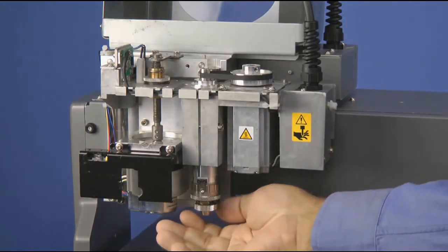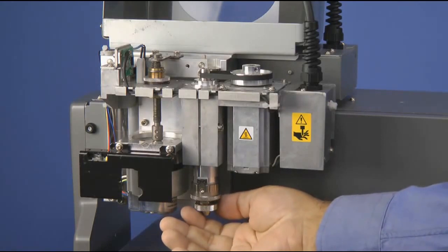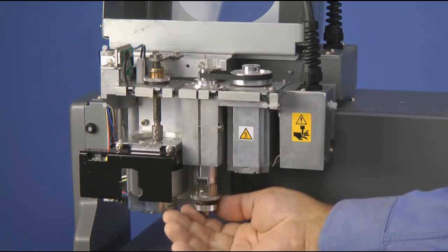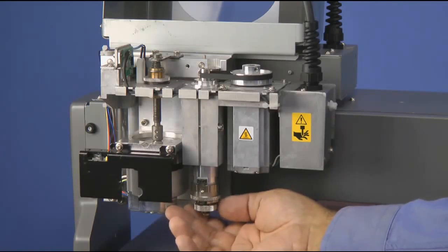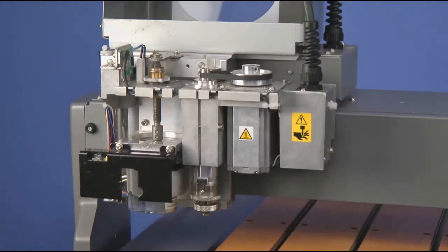Next, we will adjust the nose cone seven to eight more clicks counter clockwise. This allows us to set our depth to .041 to .042 inches. This is the depth that we want to drill our braille dots.